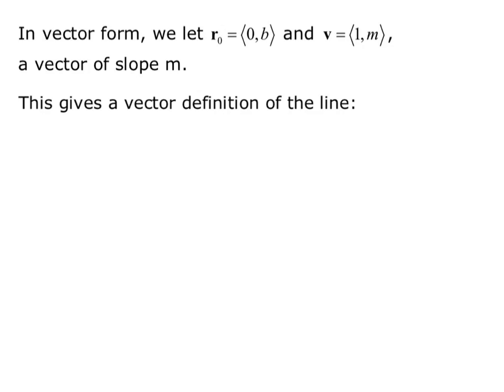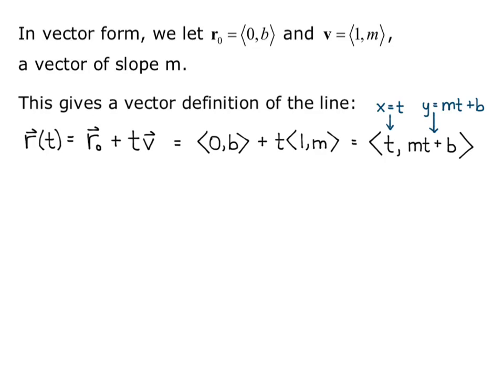This gives a vector definition of the line, so remember we're still in two dimensions. R of t equals R0 plus tv, where t is the parameter, and v and R0 are vectors. So I get the vector 0b, that's my R0 vector, plus t times the vector 1m. If I put that together, that gives me the vector t comma mt plus b, because remember when we're adding vectors, we add the corresponding components of the vectors. So this is the same as the parameterization x equals t and y equals mt plus b. I've just shown you two different ways to express a line in two dimensions, the parametric equations and the vector form.